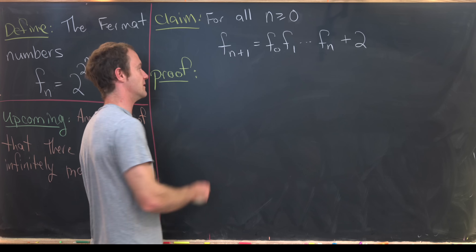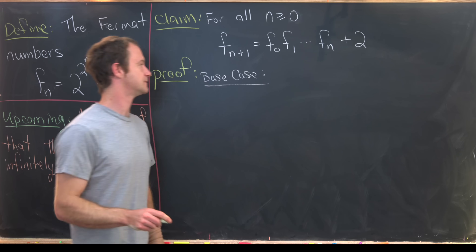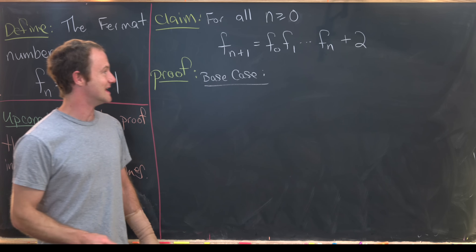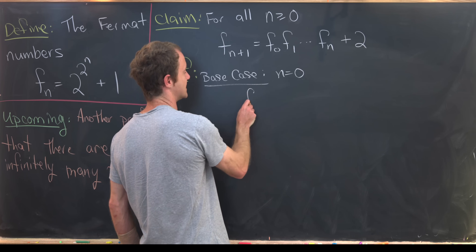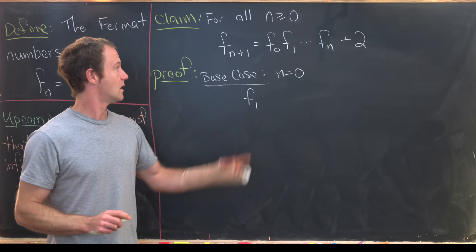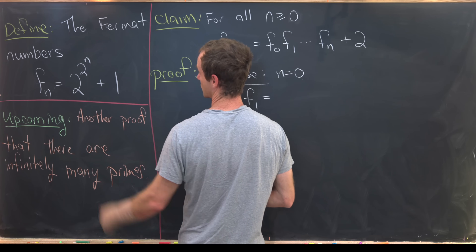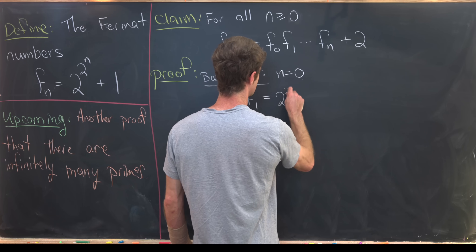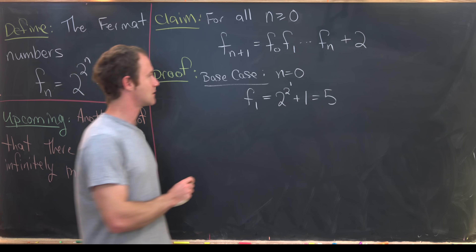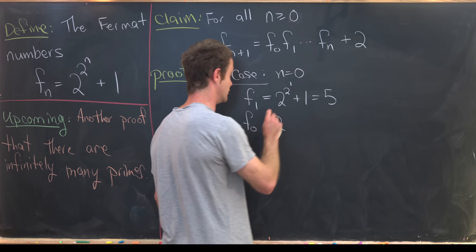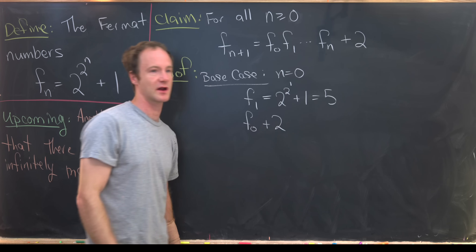The most standard way to prove this is by induction, so we start with a base case — the n equals 0 case. That leaves us with F sub 1 on the left side, since that's F sub 0 plus 1. Now F sub 1 equals 2 to the 2 to the 1, plus 1, which is clearly equal to 5. On the right-hand side we look at F sub 0 plus 2.